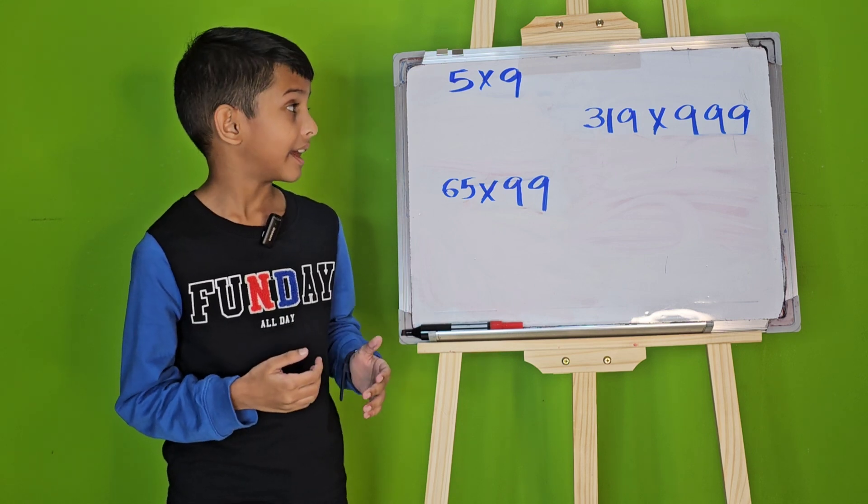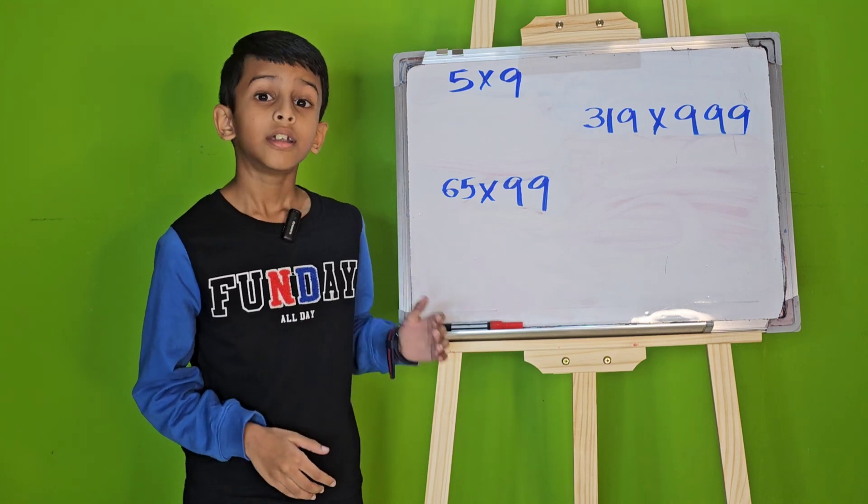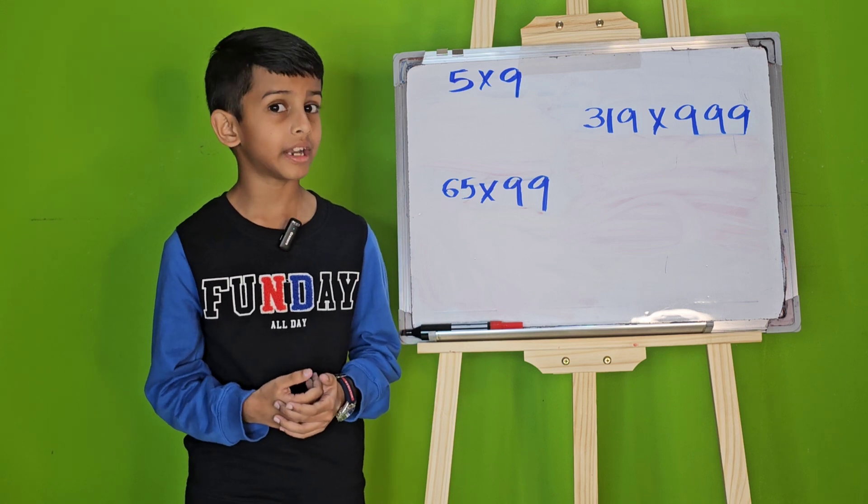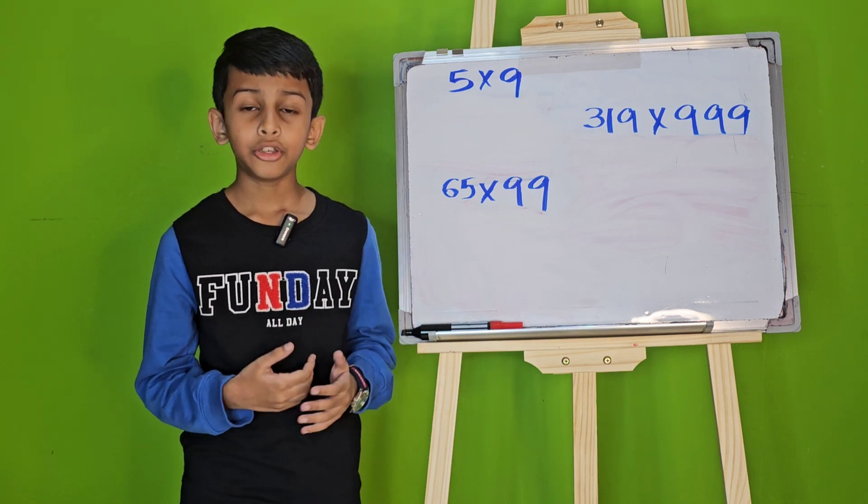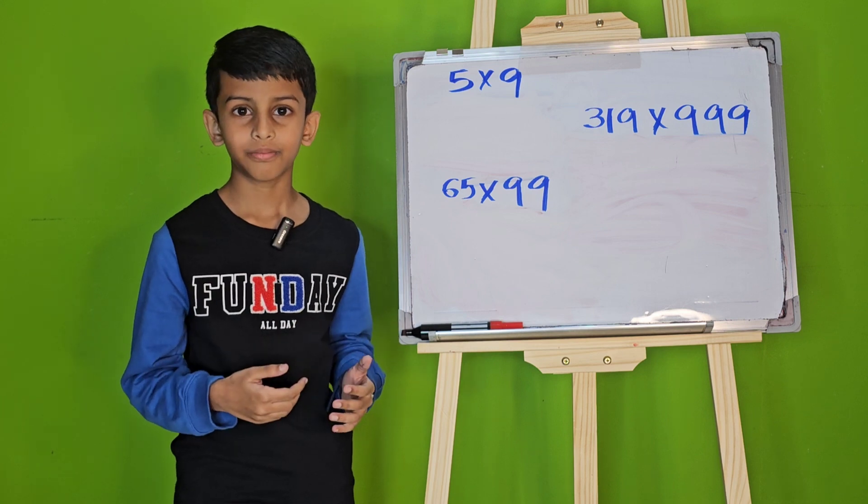Let's say that you want to multiply a number with 9, 99, 999, and so on. Instead of doing it the long way, you can use this one shortcut. Let's start.